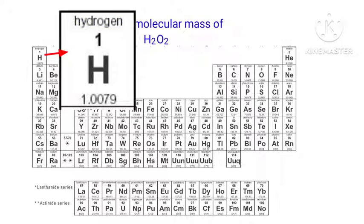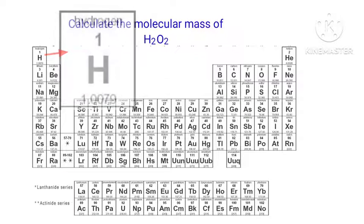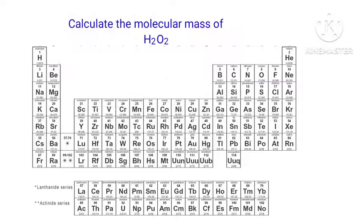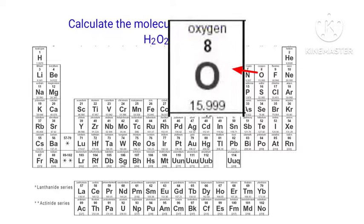The atomic mass of hydrogen is 1.0079. The atomic mass of oxygen is 15.999.